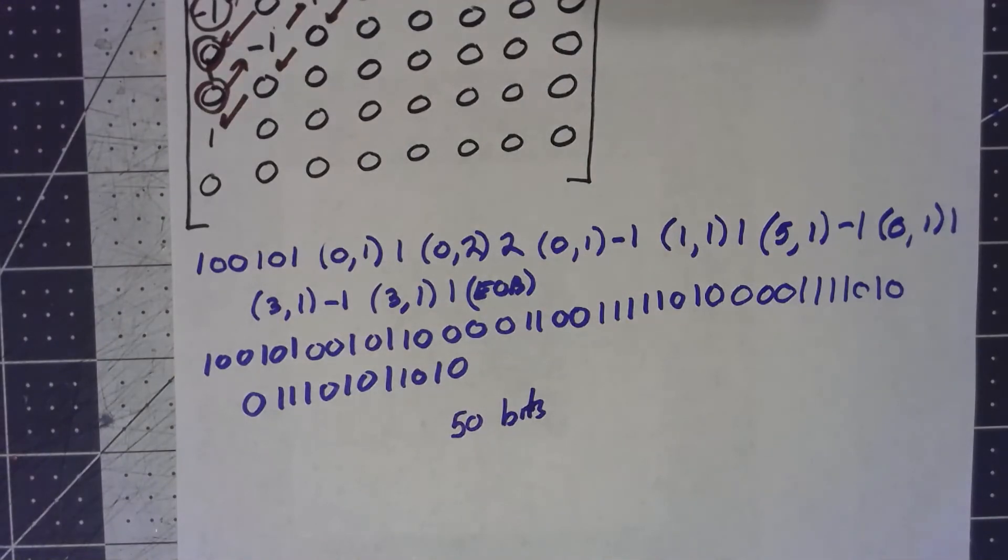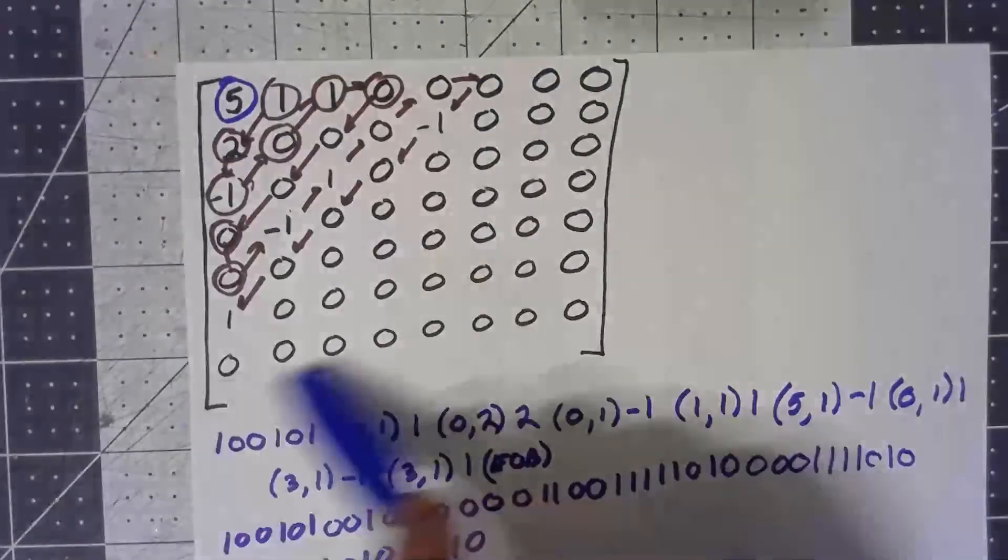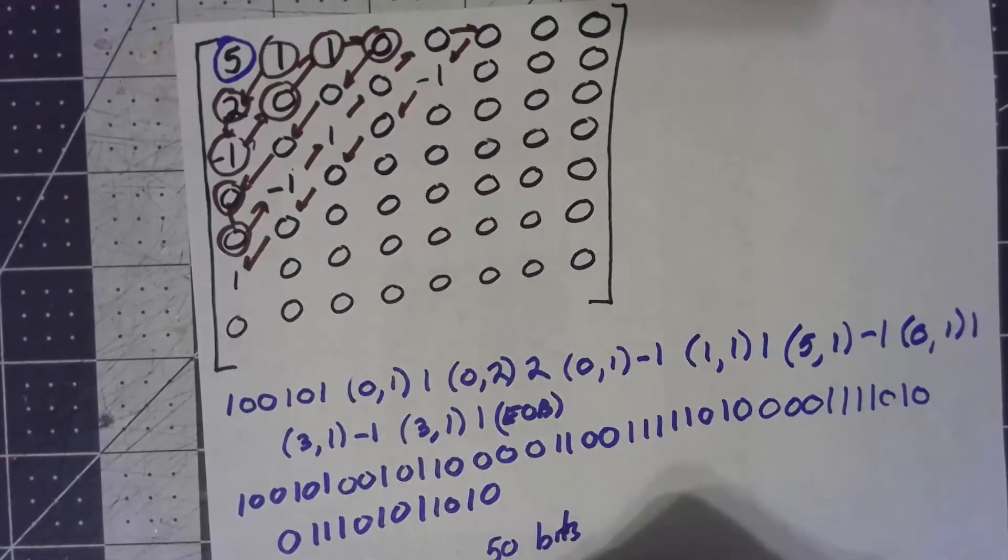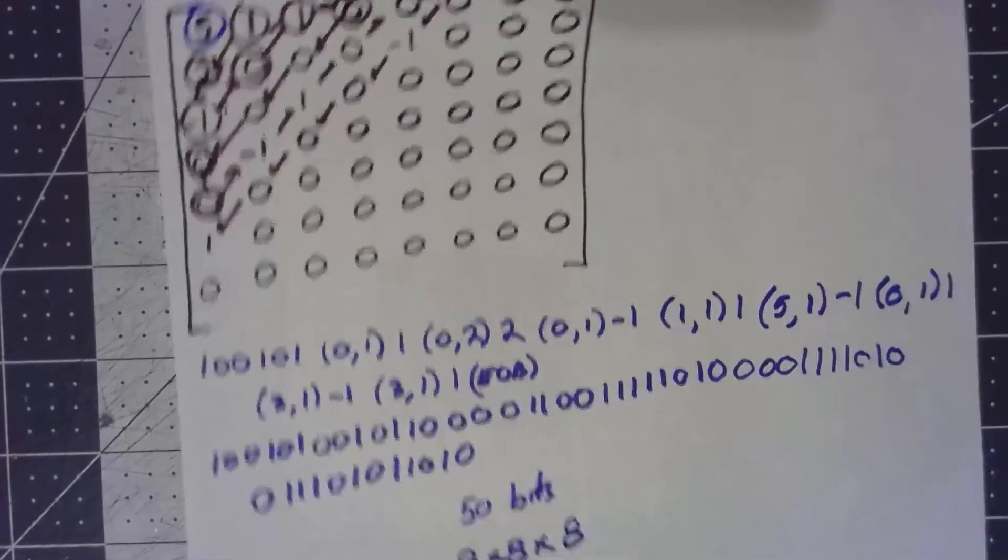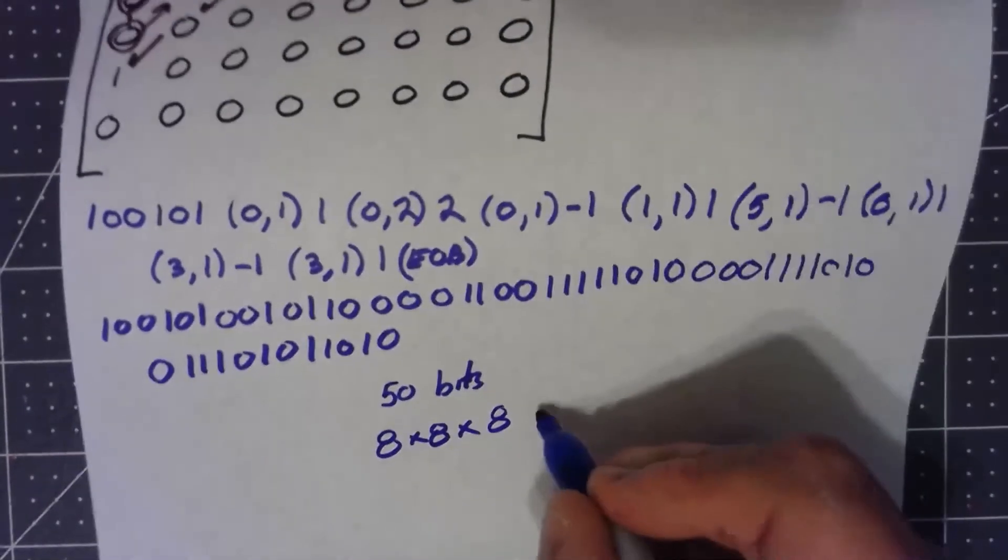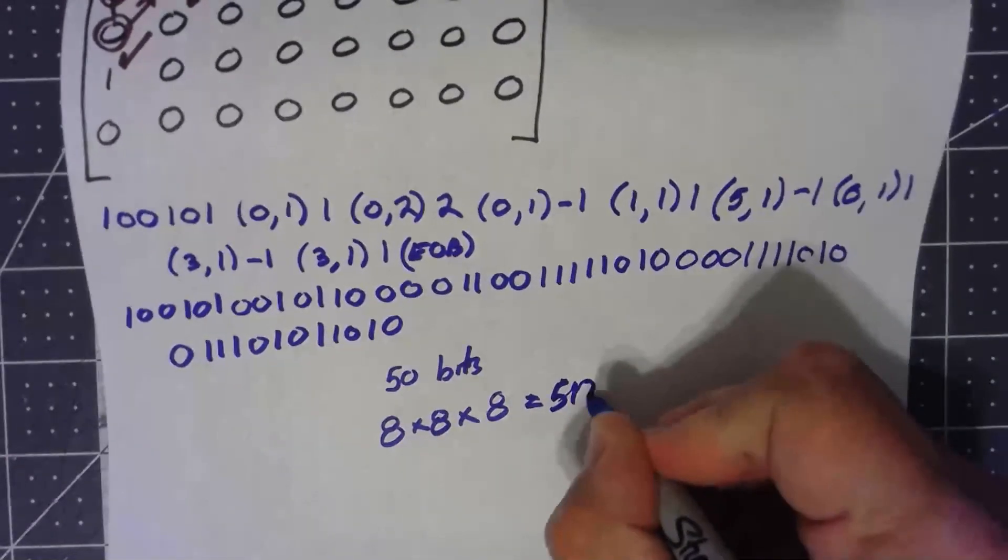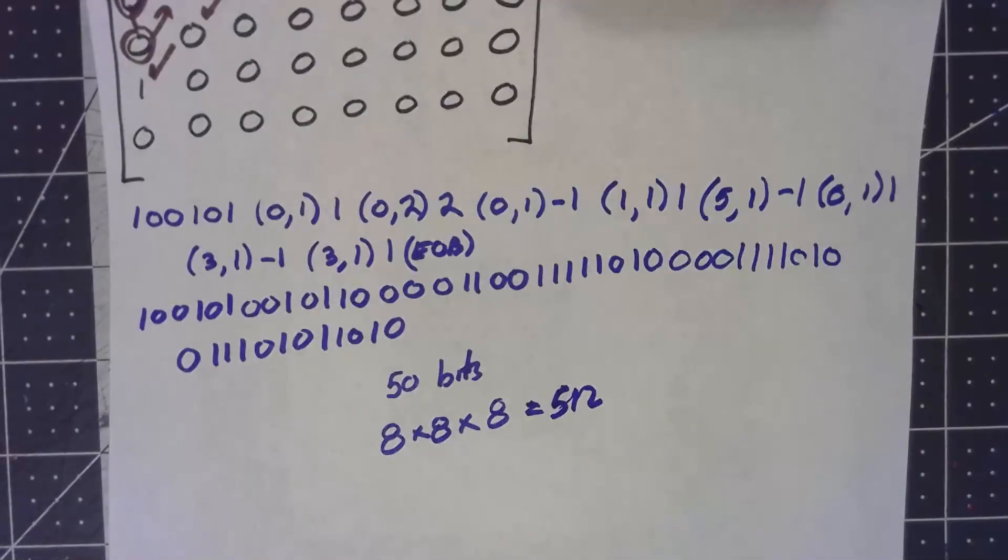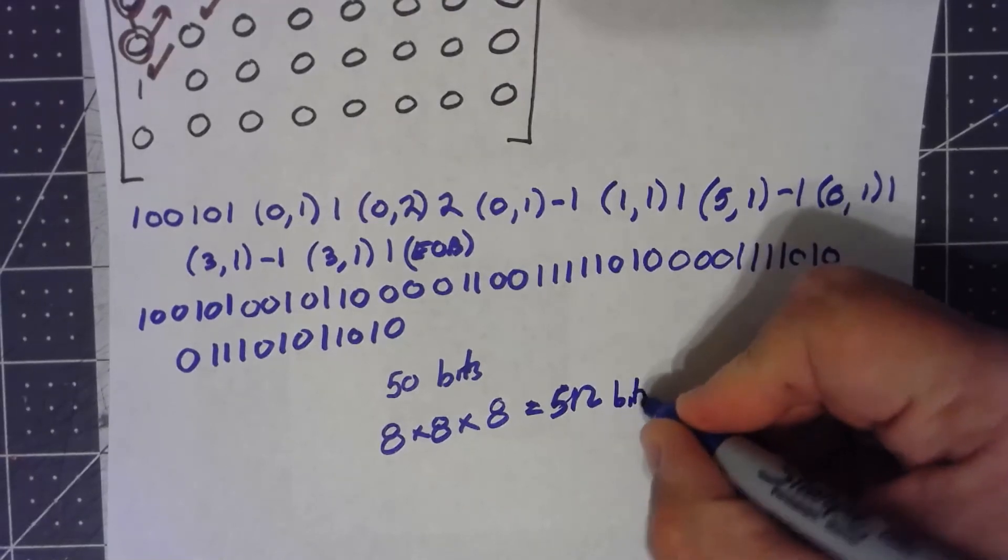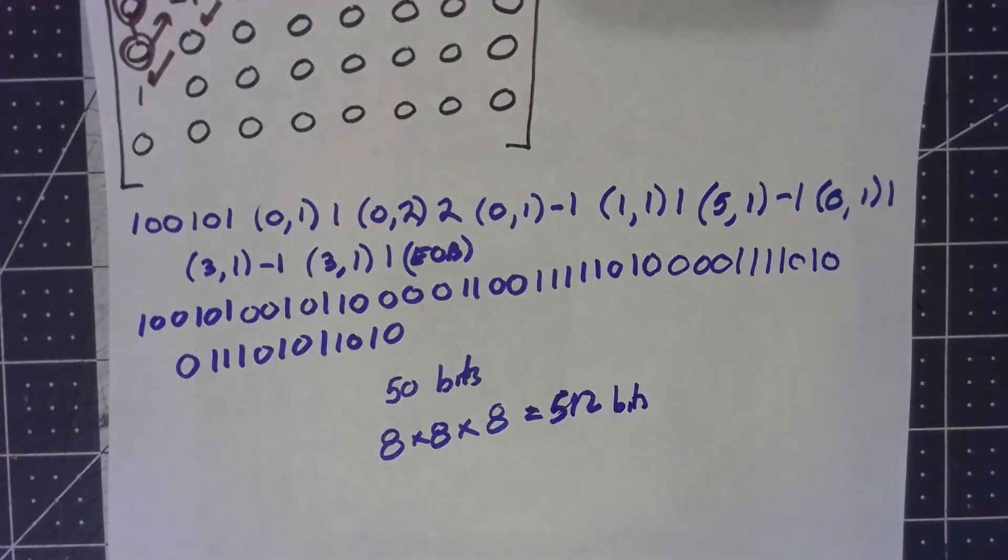Assuming I counted that right. There's only 50 bits to store what was originally in this thing, eight entries by eight entries by eight bits per entry. Before it was 512 bits to store that. We've compressed this thing by more than a factor of 10. This is huge. We get a huge amount of compression by doing all these tricks.